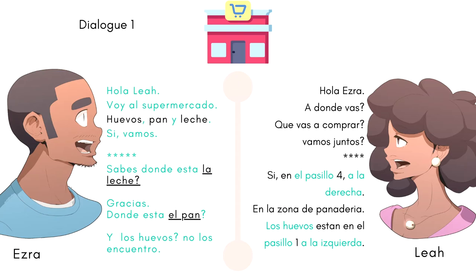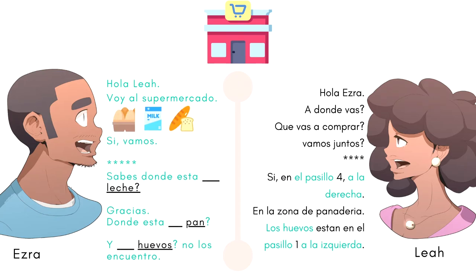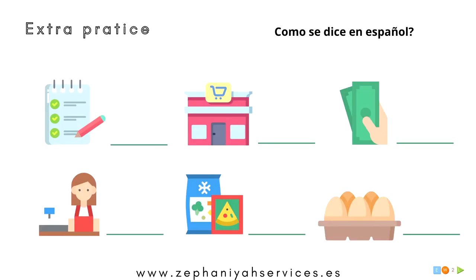Excellent. Now it's your turn to practice. So, practice this dialogue and change the item — the picture for the word. For example, if I ask Ezra what he's going to buy: ¿Qué vas a comprar? He will say, for example: voy a comprar el pan. Enjoy and practice.